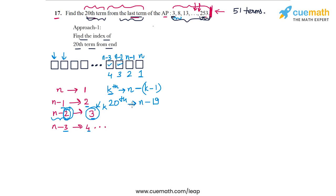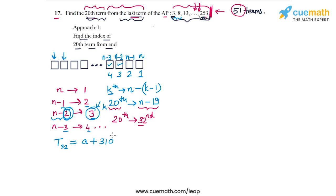That is the key idea of the first approach. The index of the 20th term from the end is N−19. Since N is 51, that gives 51−19 = 32. So the 20th term from the end is the 32nd term from the beginning. T_32 = A + 31D = 3 + 31×5 = 3 + 155 = 158. So the 20th term from the last term is 158.